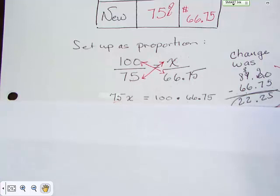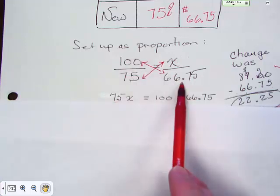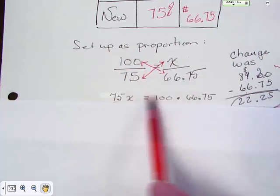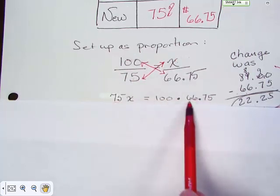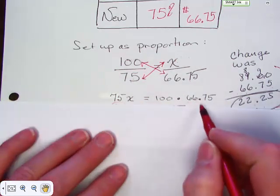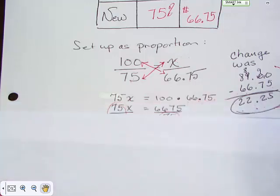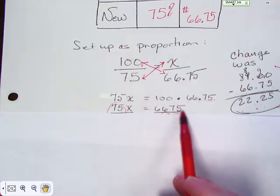So we would take one hundred times sixty six seventy five and seventy five times X. But when we take a hundred times sixty six seventy five, we're going to move that decimal over two places. You don't even have to really do the math other than to move the decimal. So we end up with six thousand six hundred and seventy five.